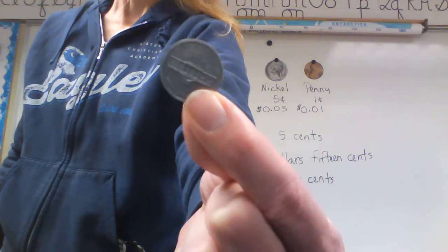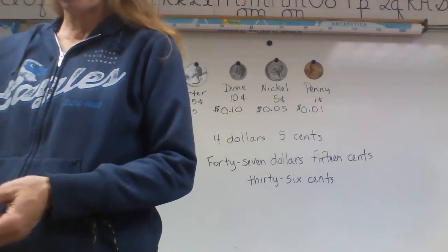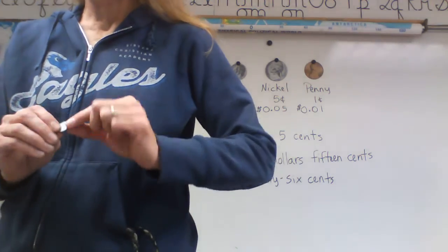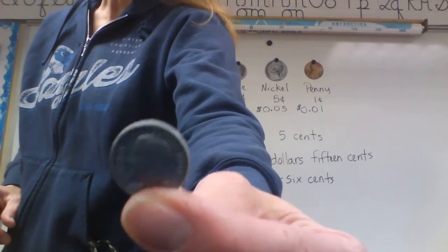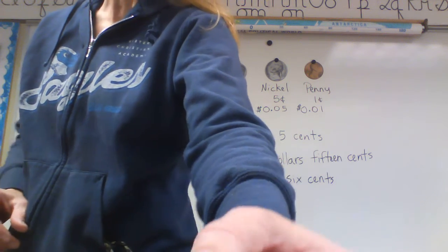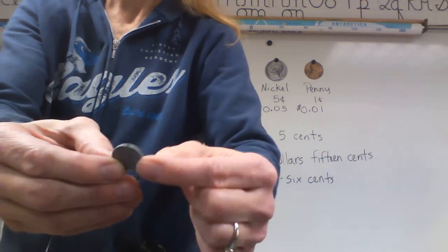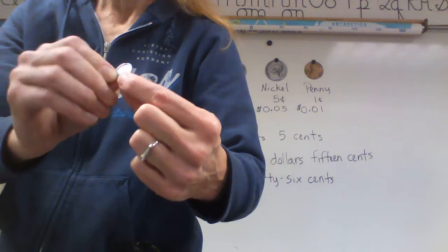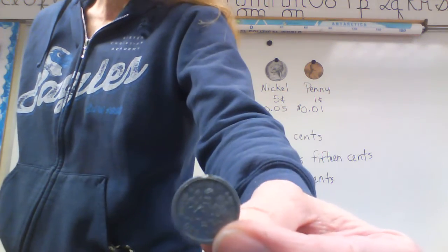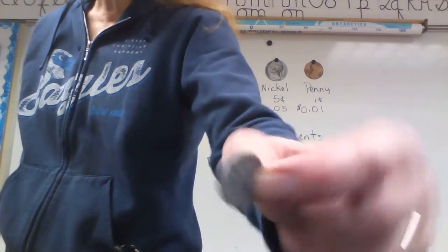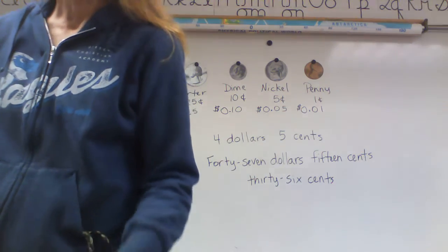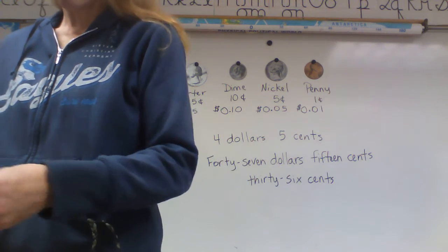With 10 cents is our dime. On the dime it's President Franklin Roosevelt, and on the back you'll see three different symbols: we have the torch which represents Liberty, the olive branch for peace, and the oak branch for strength. And then finally our last coin is the quarter, which has George Washington on the front.